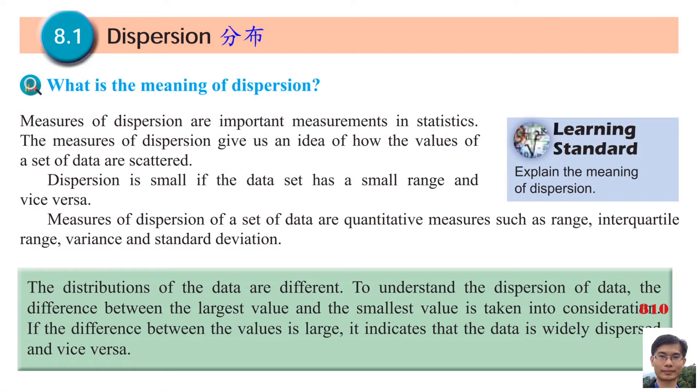Dispersion, which is 分布. What is the meaning of dispersion? Measures of dispersion are important measurements in statistics. Statistic is 統計. The measures of dispersion give us an idea of how the values of a set of data are scattered. Scattered is 分散的意思. Dispersion is small if the data set has a small range and vice versa.